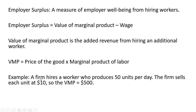For example, a firm hires a worker who produces 50 units of output per day. The firm can sell each unit of output at $10 each in the marketplace. So the value of the marginal product of labor is the price times 50, or $500.